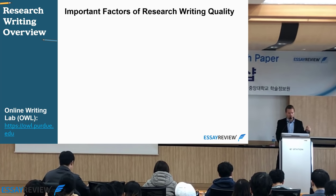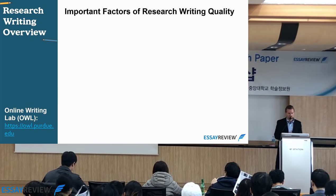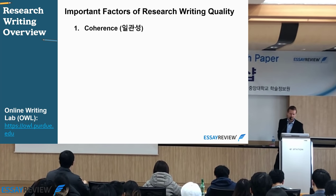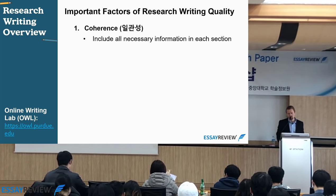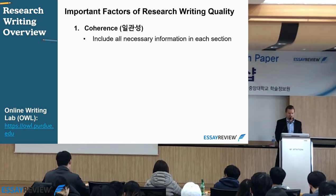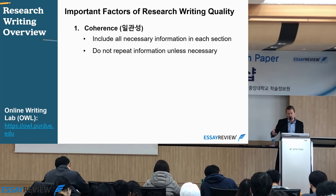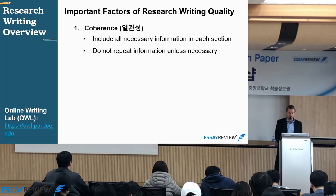Let's talk about four important factors of research writing — not research itself, but research writing. The first factor is coherence: including all of the necessary information in every section, and not repeating information. We see many times writers use the same phrase again and again — it looks very unprofessional, so you want to try to avoid that.